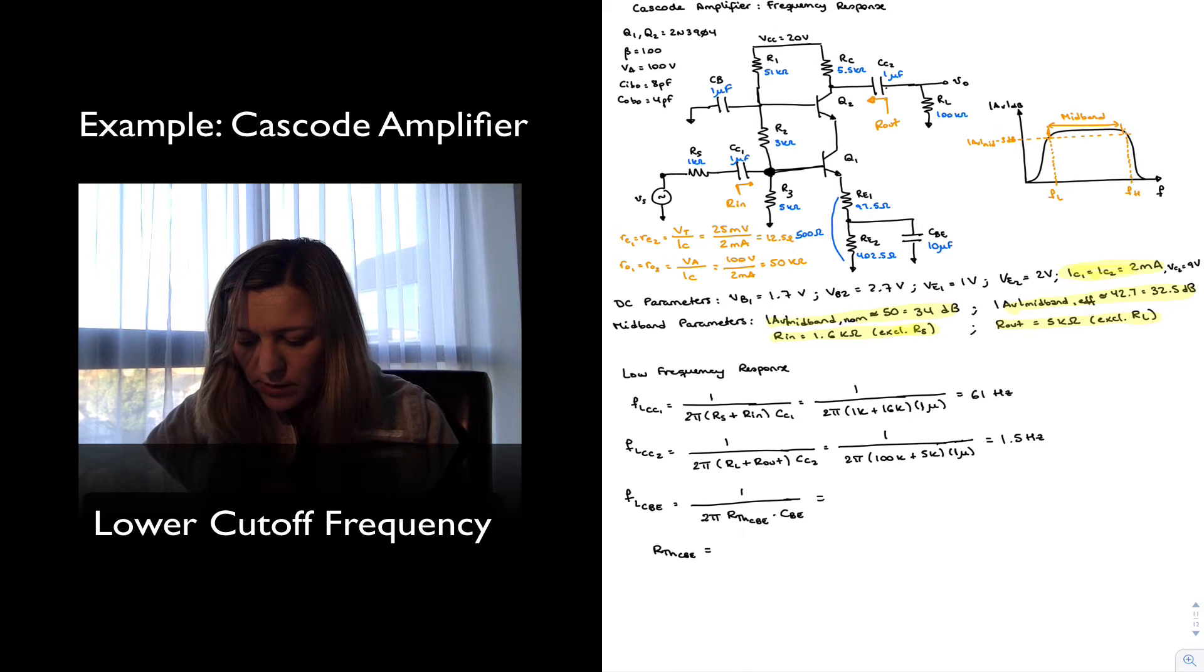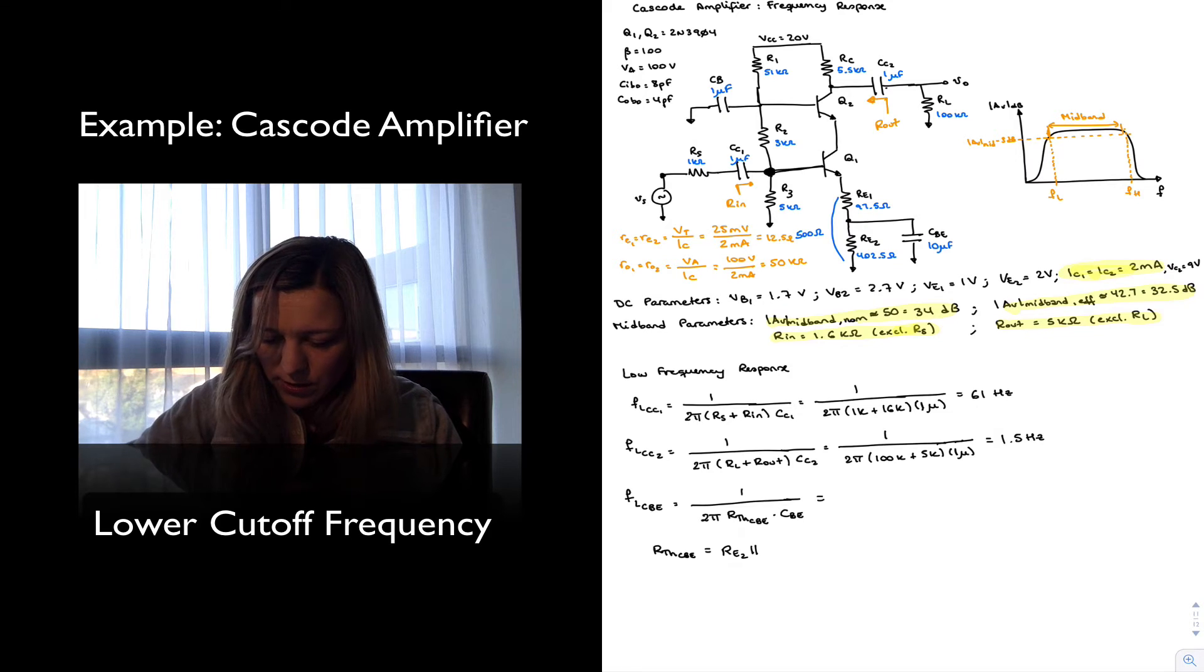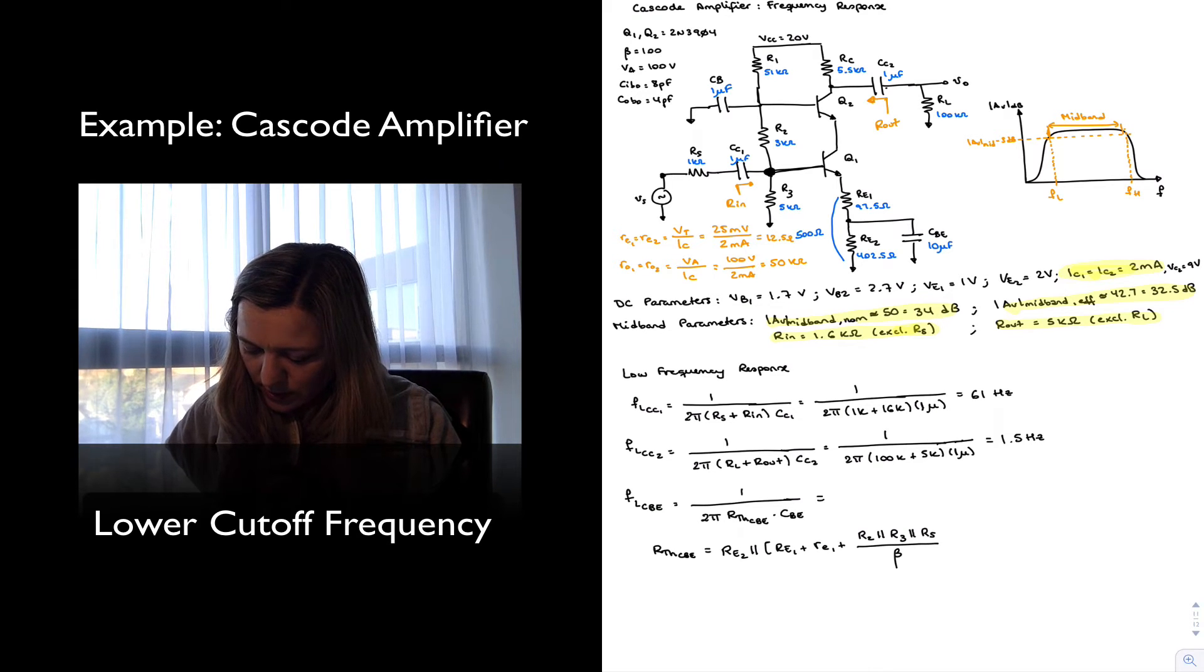So we take a look at CBE, and we see on the one side this is going to ground, on the other side we have RE2 in parallel with the series combination of RE1, little re1, plus 1/β times R2 which is connected to ground via CBE, in parallel with R3 in parallel with RS, all that divided by β.